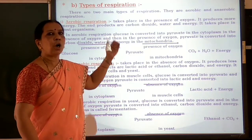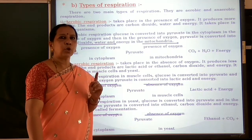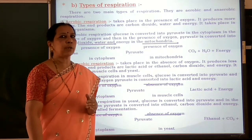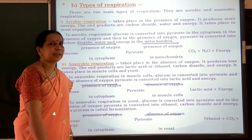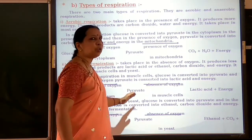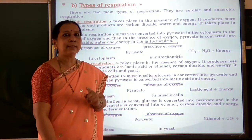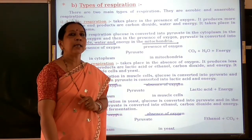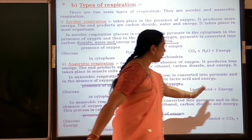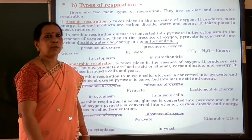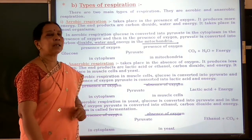Note that the first step is the same in all three pathways of respiration: glucose, a six-carbon molecule, gets converted into pyruvate, a three-carbon molecule, in the cytoplasm in the presence of oxygen. Later, in the muscle cells in the absence or lack of oxygen, pyruvate gets converted into lactic acid and energy. When lactic acid accumulates in the muscle cells, it causes cramps during sudden activity.